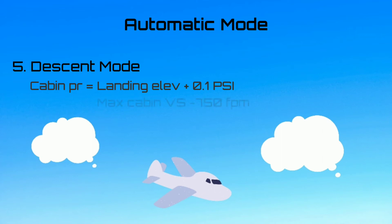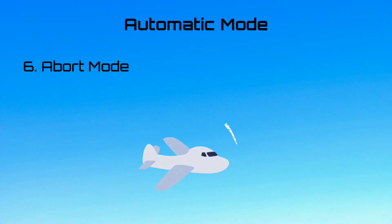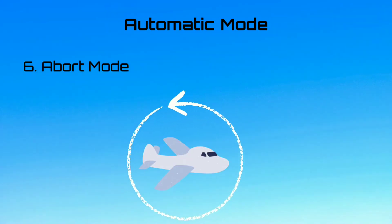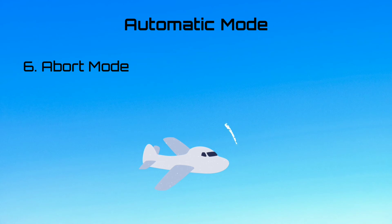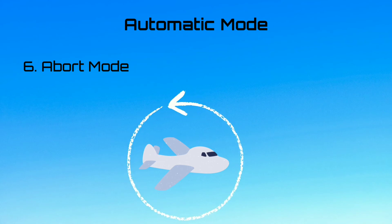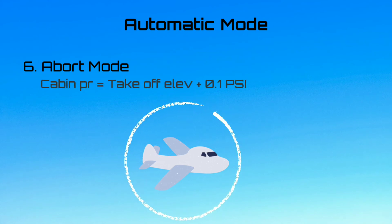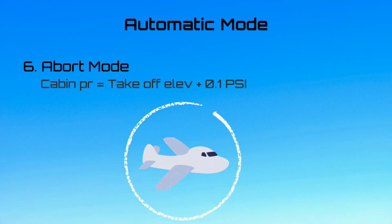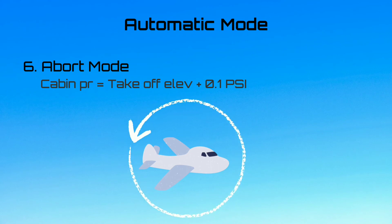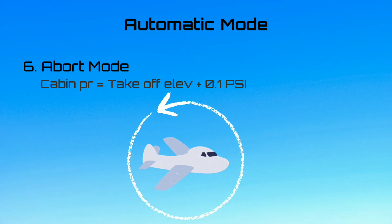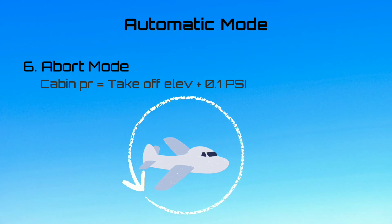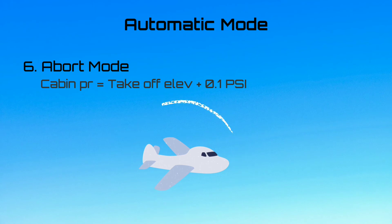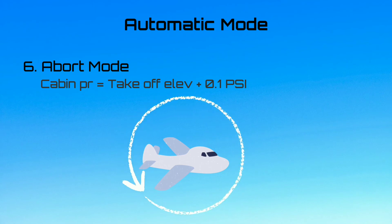The maximum descent rate is 750 feet per minute. Finally, in the abort mode, if the aircraft does not climb after takeoff, the abort mode prevents the cabin altitude from climbing. Cabin pressure is set back to the takeoff altitude plus 0.1 PSI. This mode is applicable in case of an immediate return after becoming airborne.